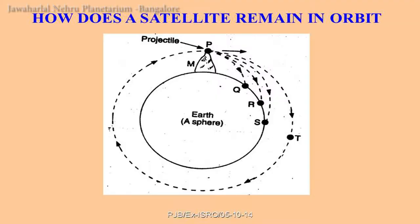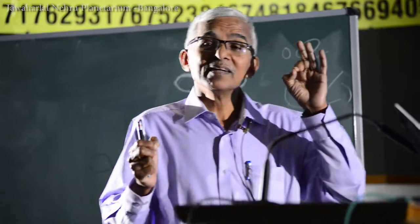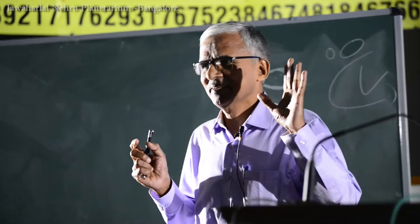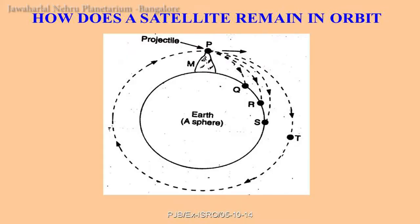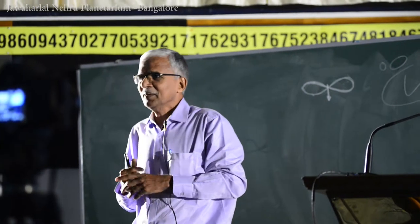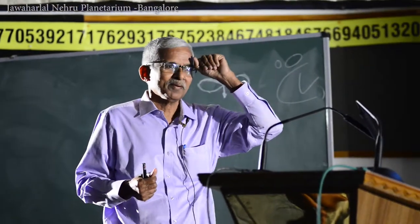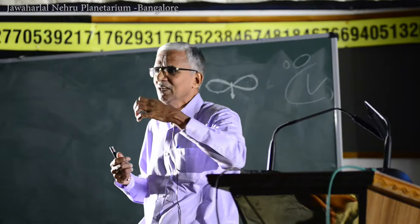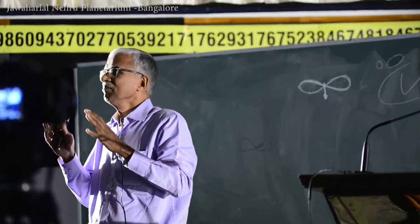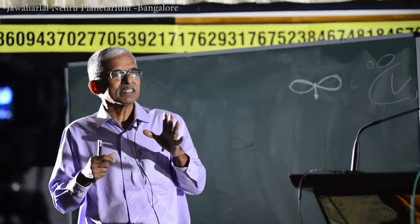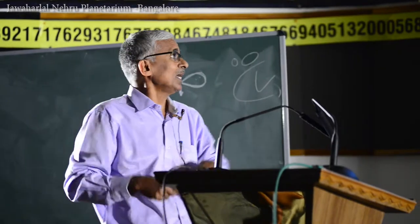To put a satellite into orbit, you take it to the required height and then impart a velocity. This is the job of the rocket. The rocket went up and bent due to Earth's gravitational force. We have to put the satellite in such a way that gravitational force cannot pull it down totally — it must balance so the satellite stays in orbit.